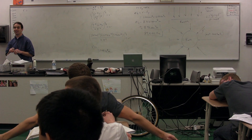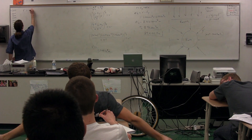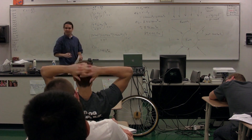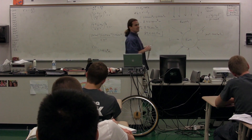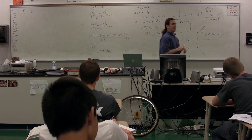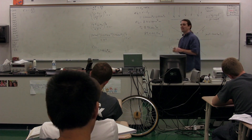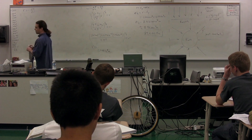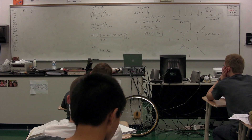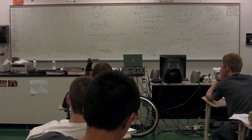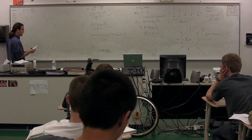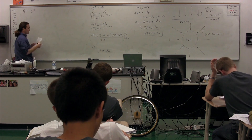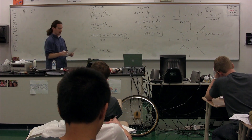A negative derivative of potential energy with respect to position. This is the equation that governs any conservative force: the force is equal to the negative of the derivative of the potential energy associated with that force with respect to position. Specifically in this case, we're talking about the force of gravity, therefore we're talking about the gravitational potential energy.